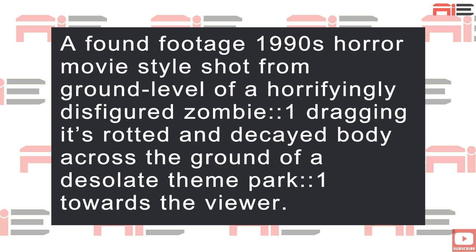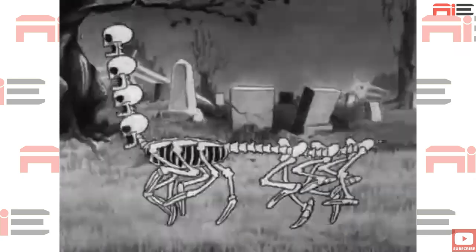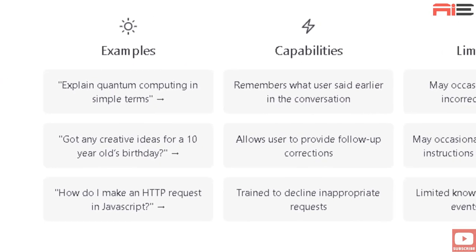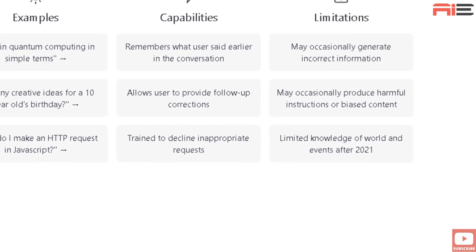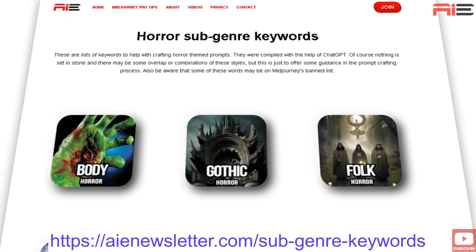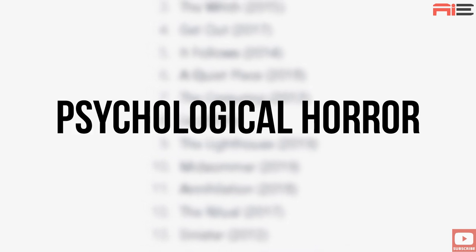I want to create some scary horror style imagery. Because horror is quite a broad word, I think it's wise to hone my ideas and come up with some associated keywords first. To do that, let's break down the genre of horror into its various subgenres to unearth the keywords. I used ChatGPT to help with this research and gathered a list of 12 different horror styles and their associated keywords. The full list will be on the aienewsletter.com website. For now, I'll just go over the first horror style, which will be psychological horror.